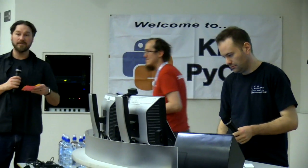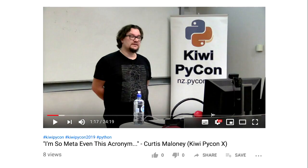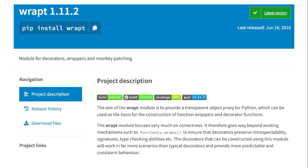Thank you Andrew. On deck after Graham we have Chelsea. But first we have Graham Dumpleton who's going to provide us some more evil. Yesterday, Curtis — or Funky Bob as everyone knows him — did a talk about how instead of using metaclasses you can use some new features in Python 3.7 to override the behaviour when accessing classes. That is interesting to me because I produce a package called wrapt.